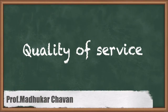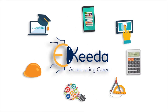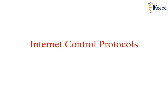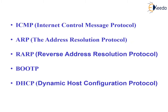Today in this video we will discuss about internet control protocols. In the network layer of the TCP/IP reference model, the main protocol is the internet protocol (IP), used for data transfer. The internet has several control protocols used in the network layer, including ICMP (internet control message protocol), ARP (address resolution protocol), RARP (reverse address resolution protocol), BOOTP, and DHCP (dynamic host configuration protocol).